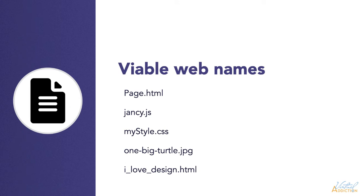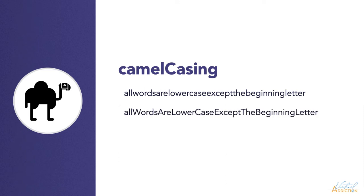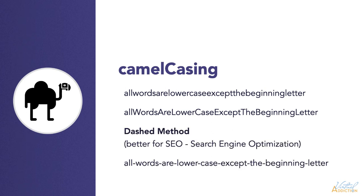When we name files, it is possible to use capitals and lowercase, although I recommend just using lowercase unless you're writing something that has multiple words. Notice this string of letters — it's actually a bunch of words slammed together without spaces, and it's very difficult to read. But notice what happens when we use camel casing, where everything is lowercase except for the first letter of any subsequent word. You can see how much more easily you can read the string of text. This is my preferred naming convention, though I will use the dashed method when I'm really concerned with SEO.